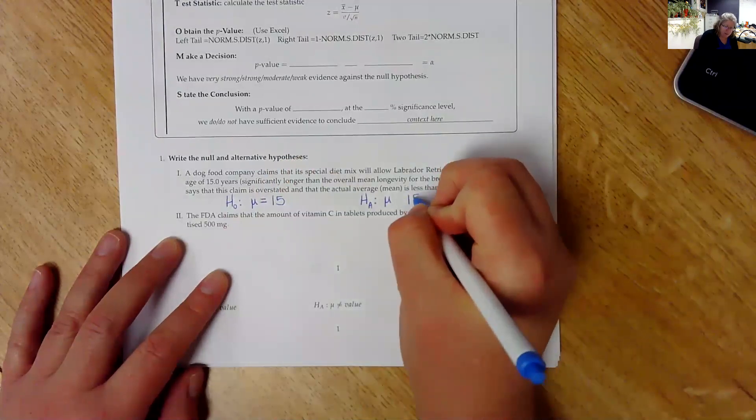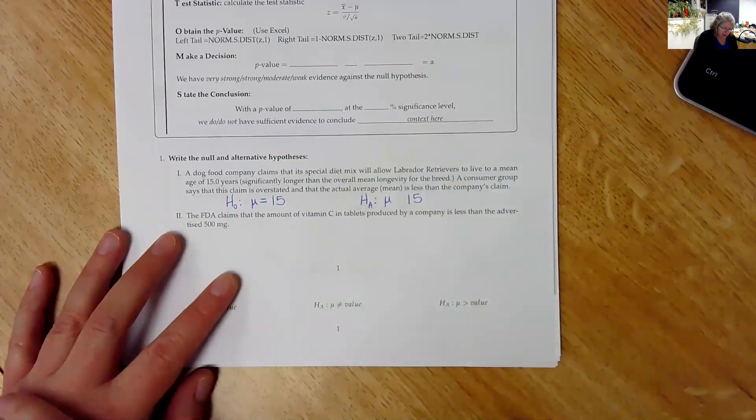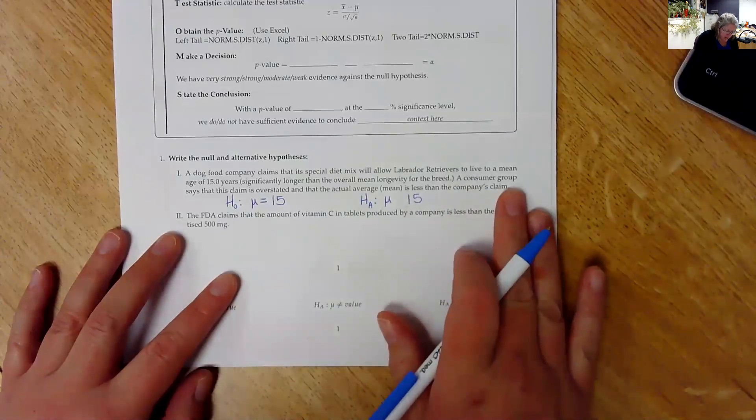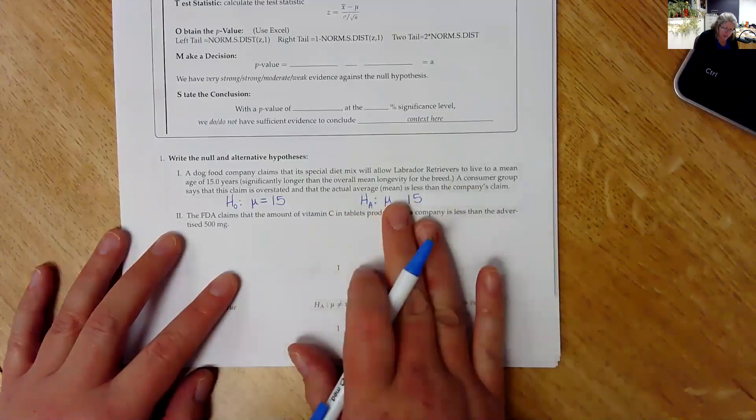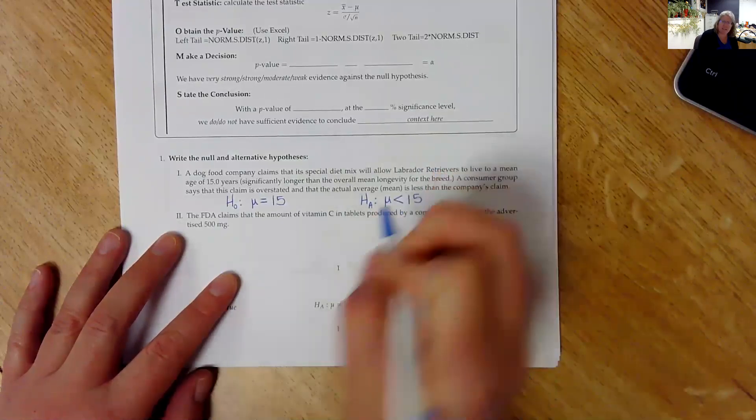And if my mu is 15, that means I'm going to use 15 here for the alternative hypothesis as well. And then the consumer group says that the actual average is less than the company's claims. In other words, mu is less than 15. That gives me my two hypotheses right there.